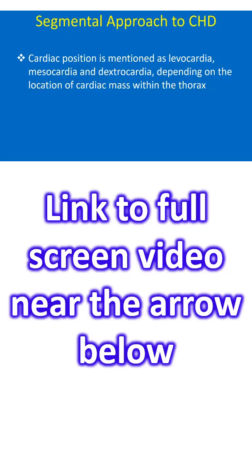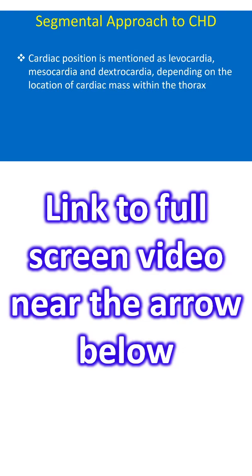Cardiac position is described as levocardia, mesocardia, and dextrocardia, depending on the location of the cardiac mass within the thorax. The base-apex axis is also considered in differentiating between levocardia and dextrocardia. Usually, the base-apex axis and the cardiac position based on cardiac mass in the thorax are concordant.